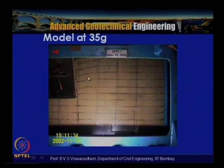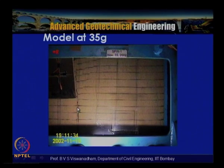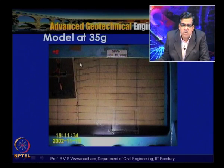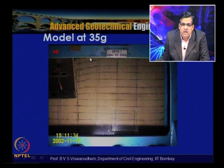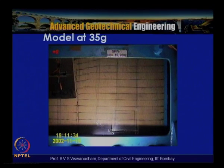A close view at 35g shows the wall has undergone permanent deformations. The bottom portion shows no movement, but the upper portion shows multiple slip planes. Colored sand lines show step-type deformations across the width of the plane strain container. This is a classical failure observed for deformation of a sheet pile wall embedded in sand with a very low wall stiffness.